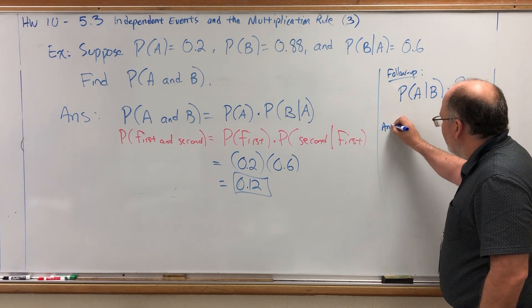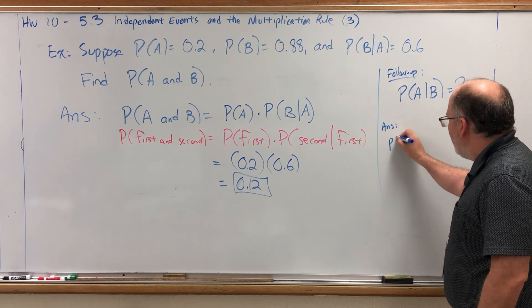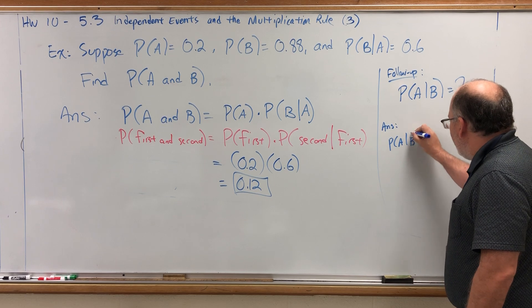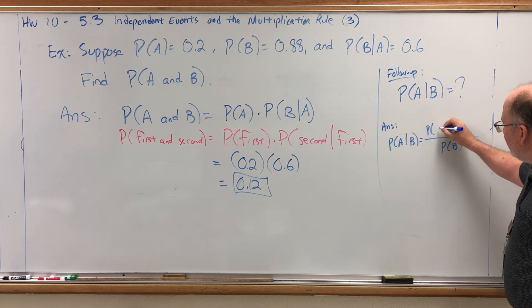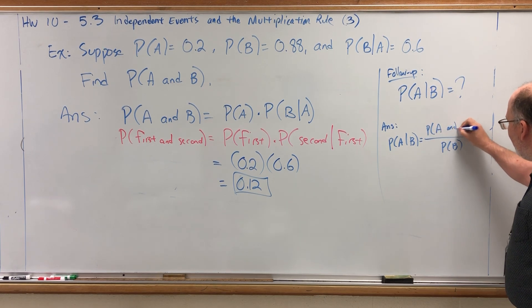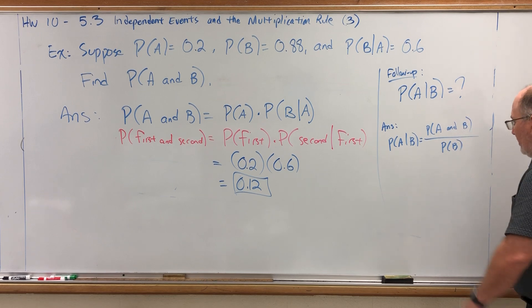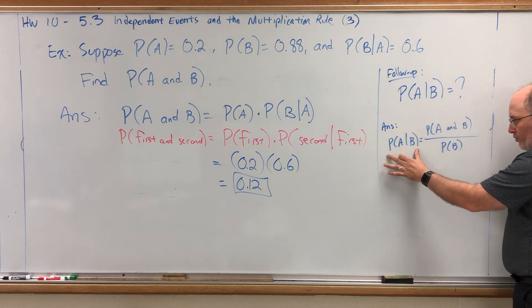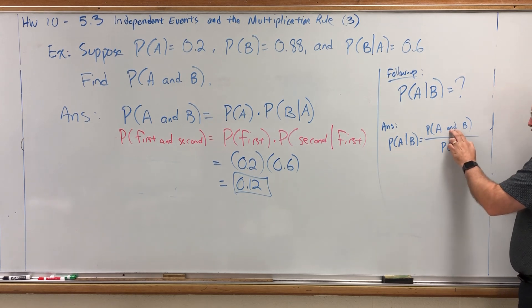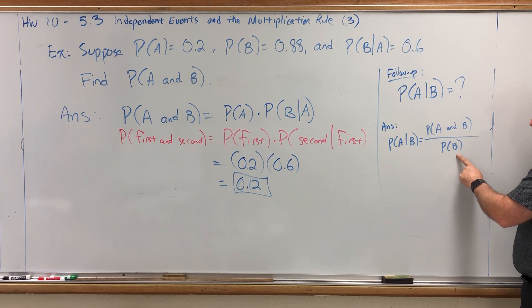Well, did we not have a formula for conditional probability? Probability of A given B is the probability of B on the bottom and the probability of A and B on the top. Remember, the probability version of the formula for conditional probability has the joint probability on the top and the probability of the condition on the bottom. Do we not know both of these?